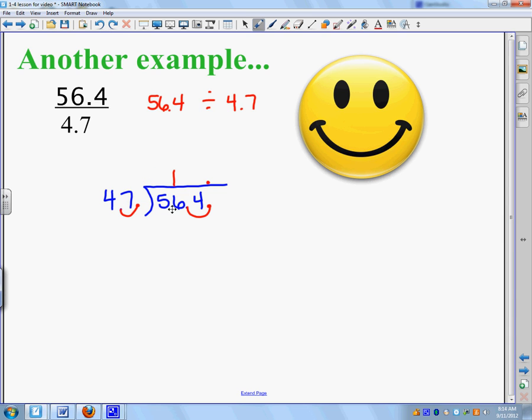I put it right above the 56. So, that becomes 47. 56 minus 47 is 9. I bring my 4 down. So, now I have to line it up. I have to put what goes above the 4. So, 47 goes into 94 twice. So, my answer is 12.